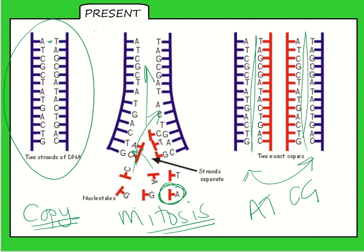The significance of the blue and red strands is that the new DNA is always made from half of the original DNA. This is described as semi-conservative — half the original DNA. You just need to know about DNA replication and that it happens in mitosis.